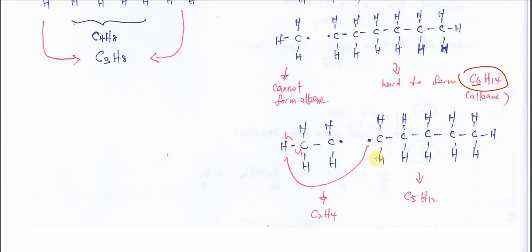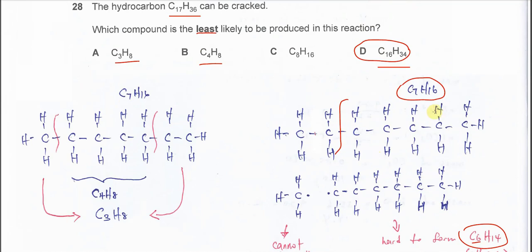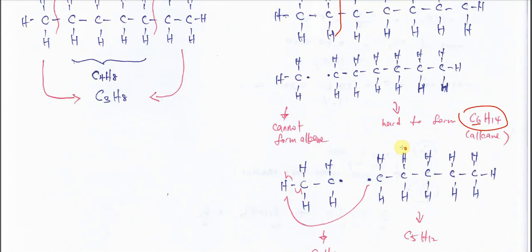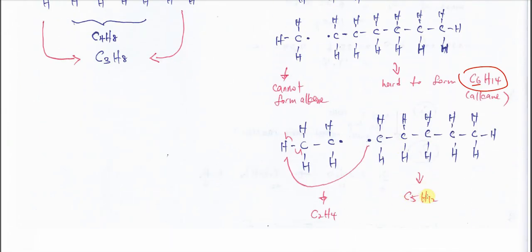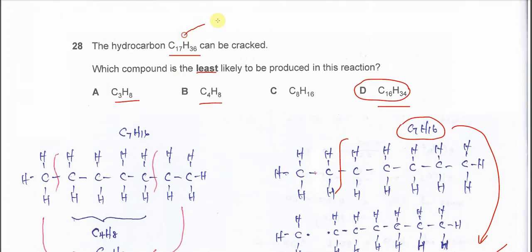Therefore, it's easier for the hydrocarbon, let's say C7 to form a shorter one, shorter by two carbon. It's possible, it can happen. Shorter by one carbon is relatively more difficult, like from C7 to C6, or from C17 to C16. Concept is the same.